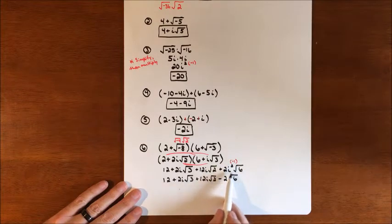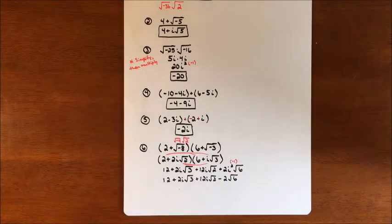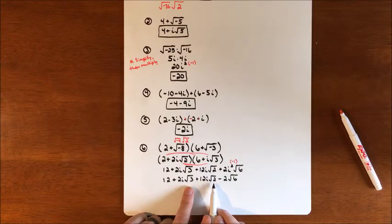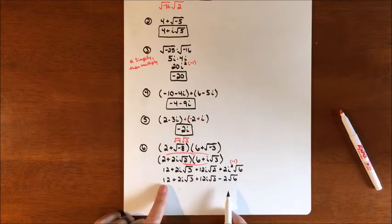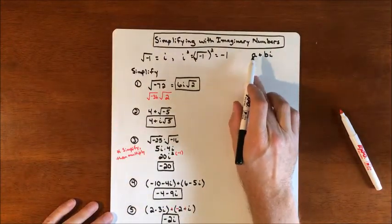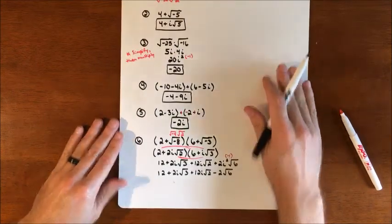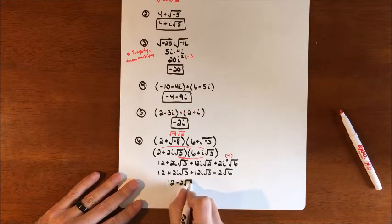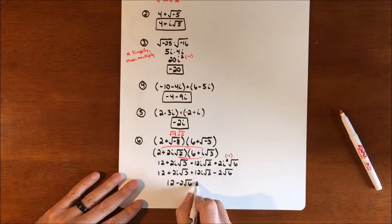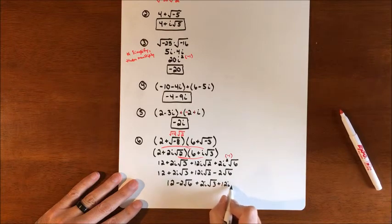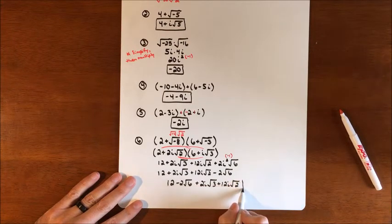After substituting i squared equals negative 1, we have 12 plus 2i√3 plus 12i√2 minus 2√6. We try to combine like terms: the imaginaries have different radicands (√2 vs √3) so they're not like terms, and the real terms 12 and negative 2√6 are also unlike. We organize by putting reals first and imaginaries second, and that's as far as we can simplify.